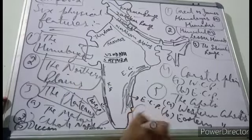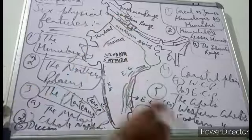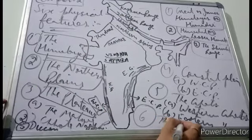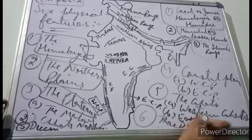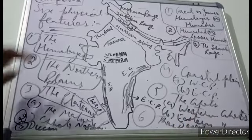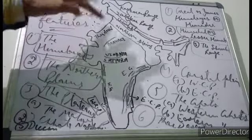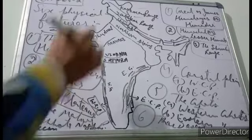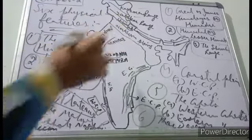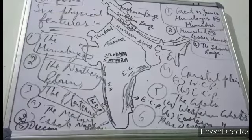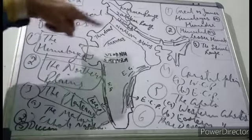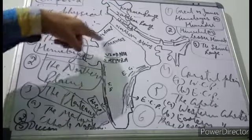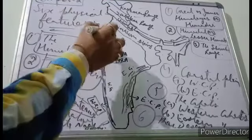The sixth and last physical feature is the Thar Desert, also known as the Great Indian Desert. The Thar Desert is in the Rajasthan region — especially the western part of Rajasthan is almost entirely a sandy region. This is the Thar Desert.